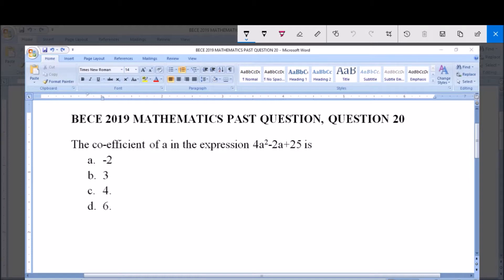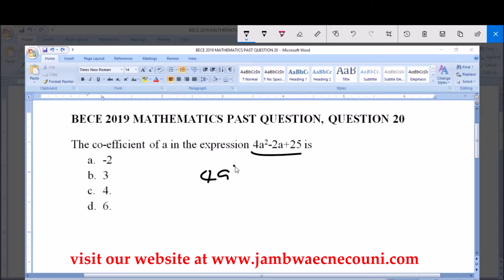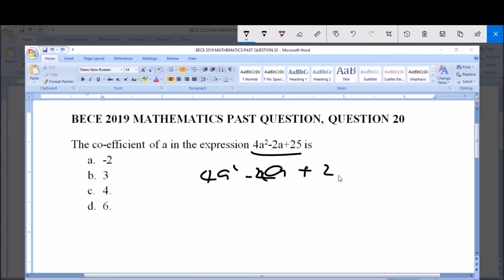So the coefficient of a in the expression 4a squared minus 2a plus 25 is what we need to find. Now this expression here is a quadratic equation and we are asked to find the coefficient of a in this expression. Let me write this expression out clearly. So we have 4a squared minus 2a plus 25.